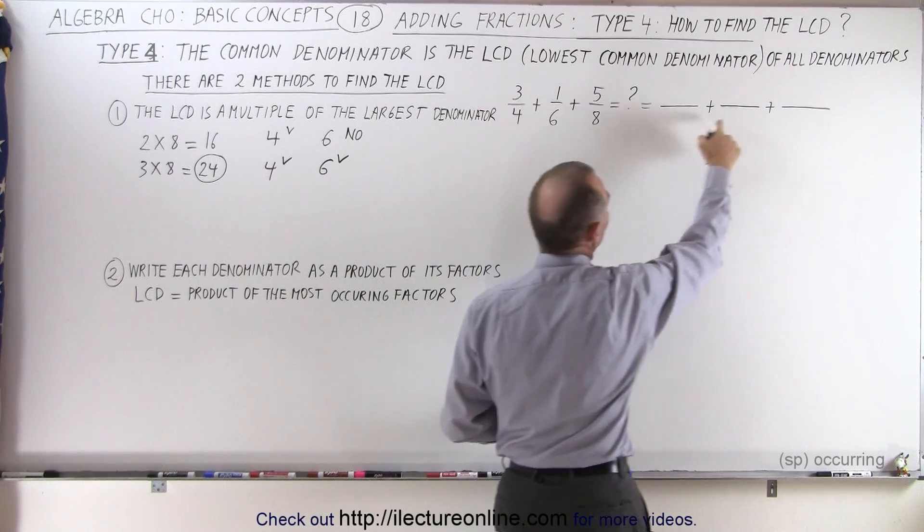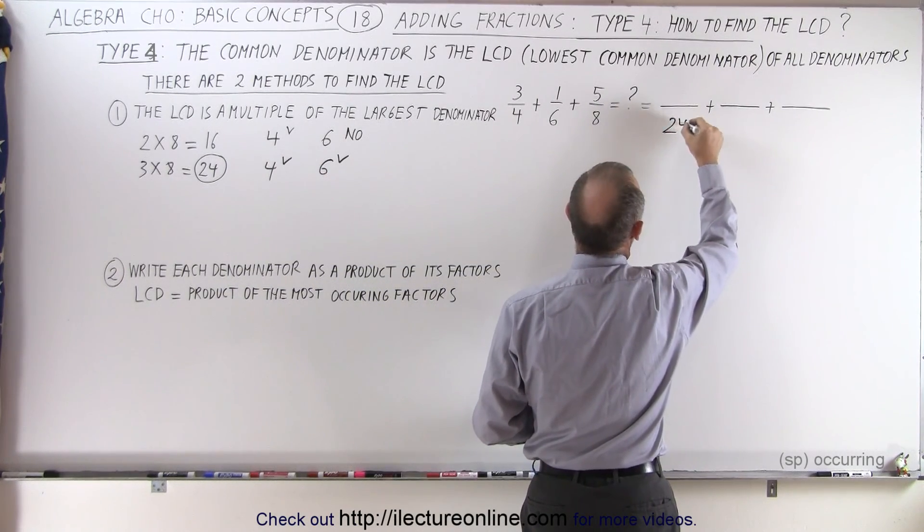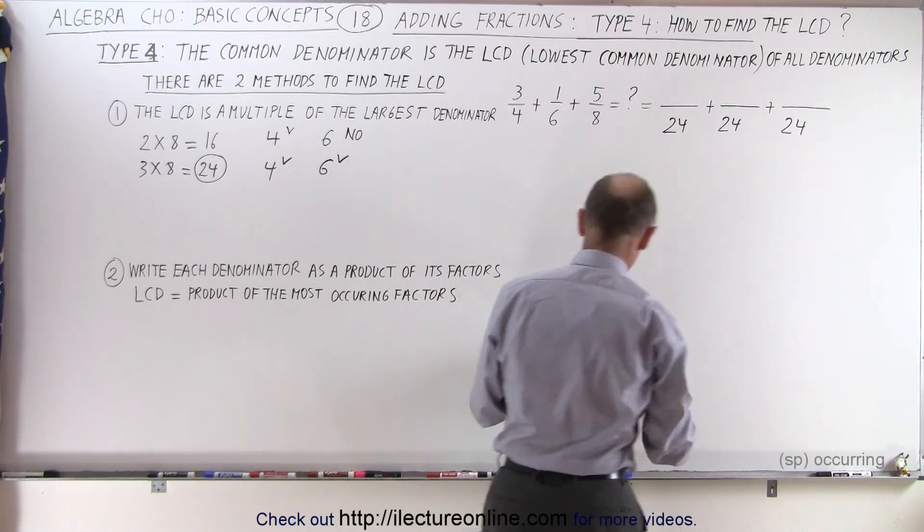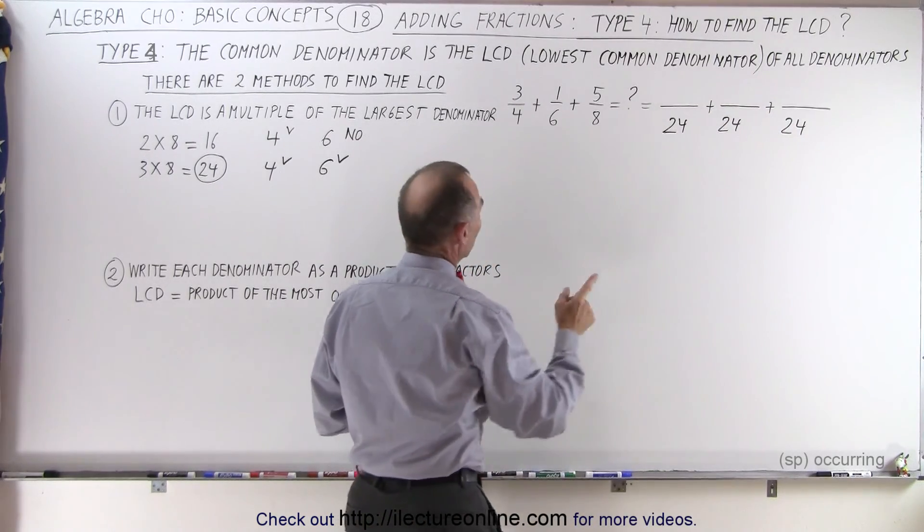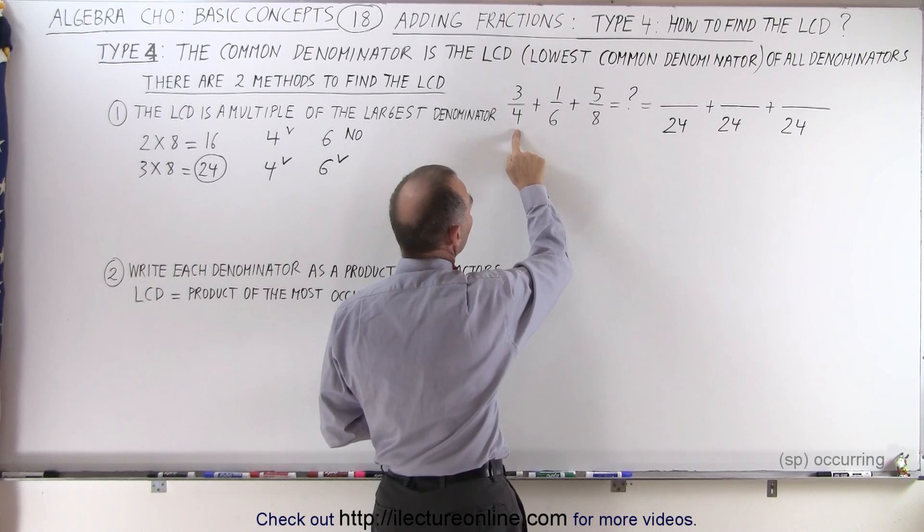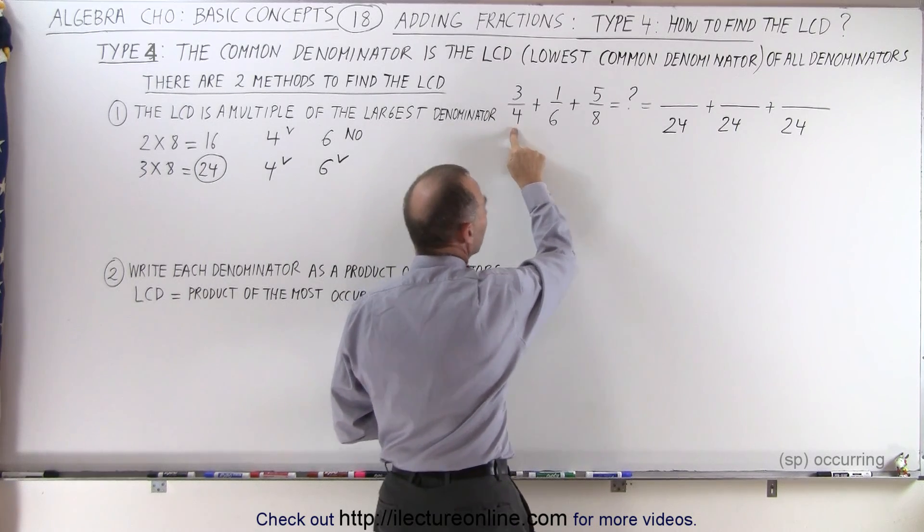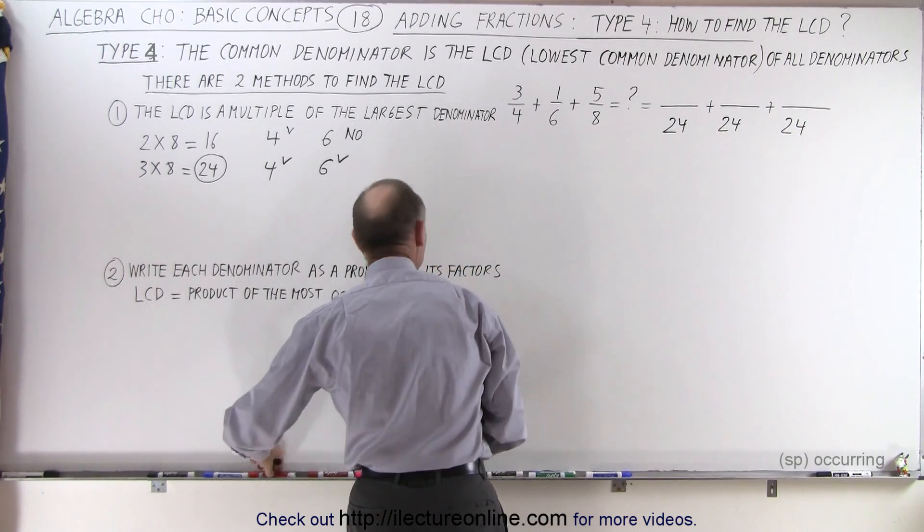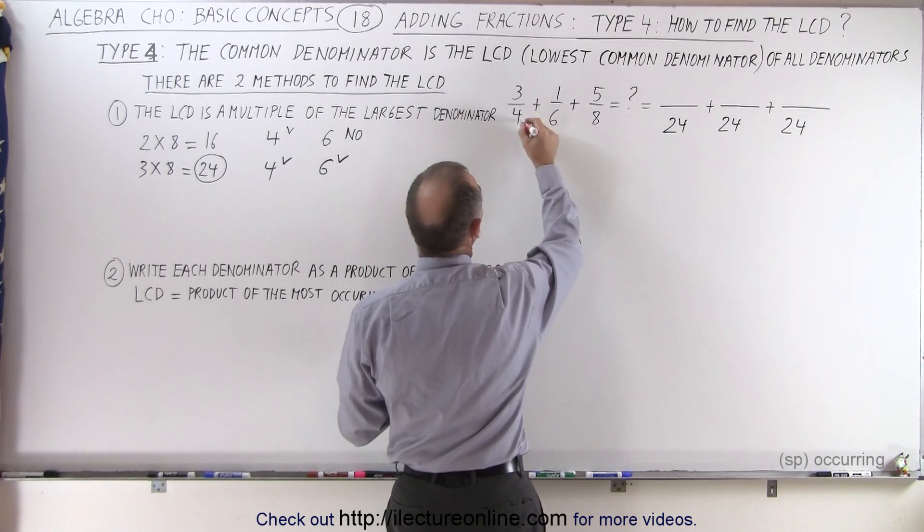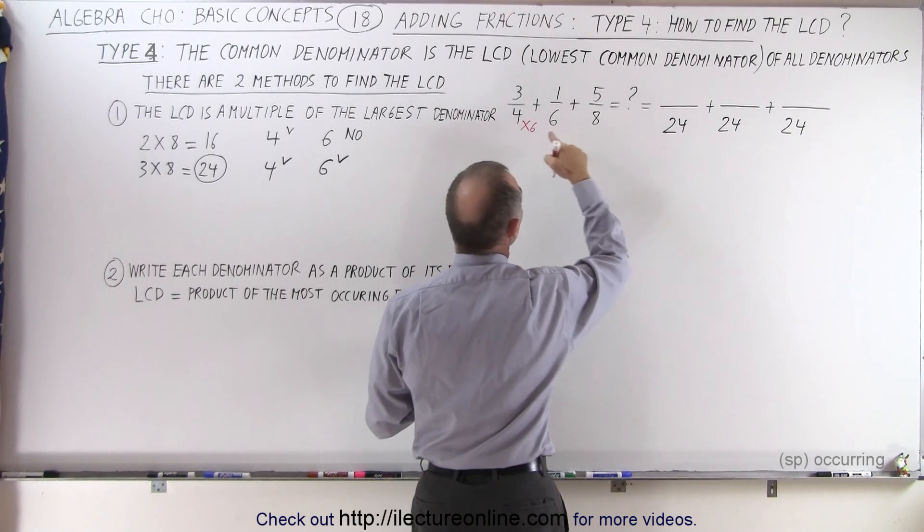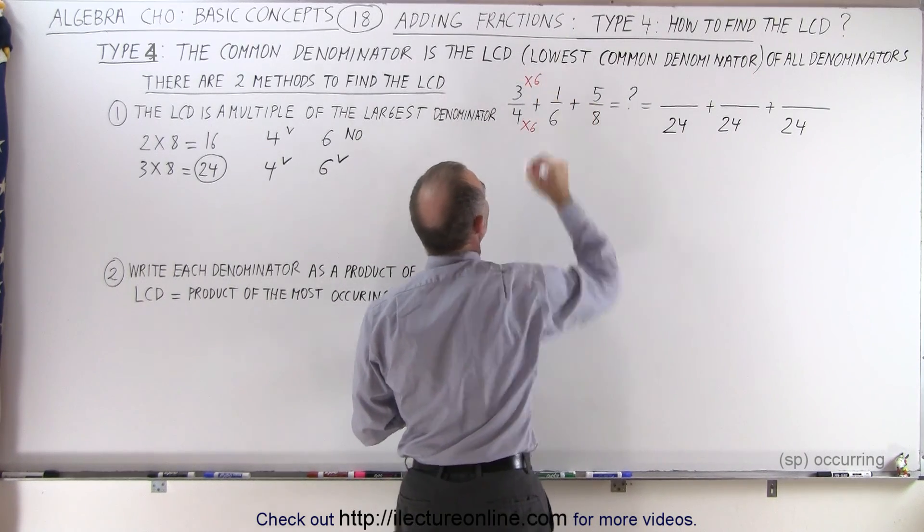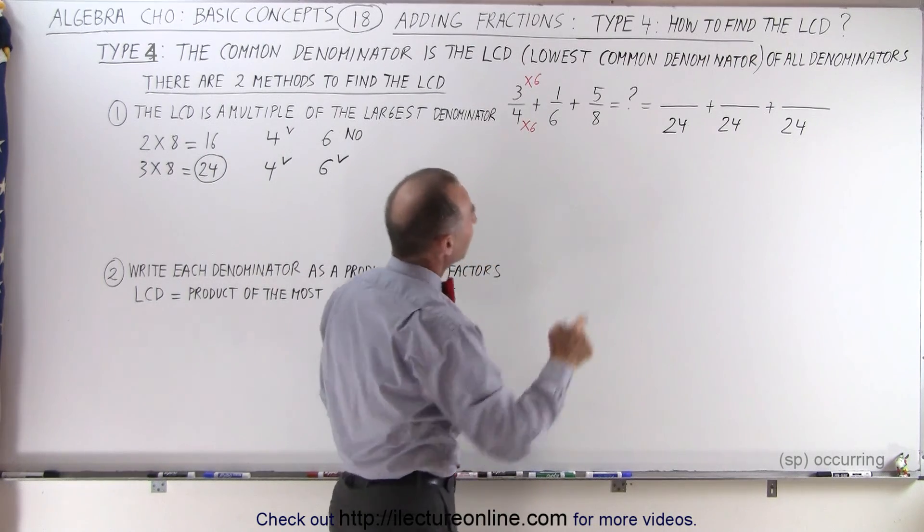Now the question is, how do we find the numerator? Well, what we ask ourselves is, how many times do we have to multiply 4 by to get 24? We realize 4 times 6, and let's write that down here. So 4 times 6 will give us 24, which means if we multiply the denominator by 6, we must multiply the numerator by 6 as well.